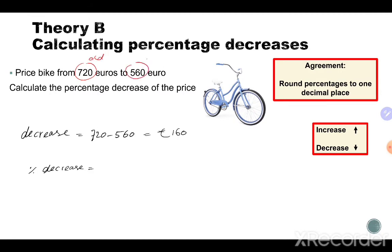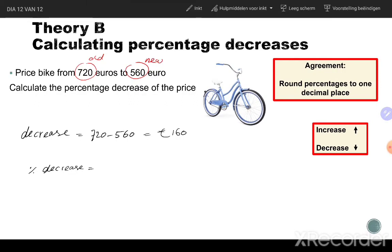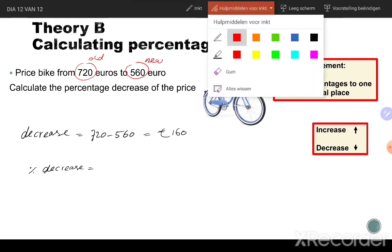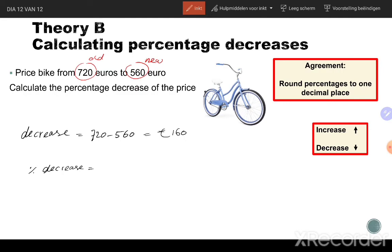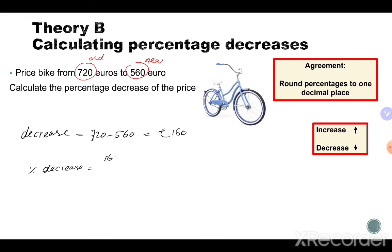To calculate the percentage decrease, we do 160 divided by 720, then multiplied by 100. So we divide by the old price. 160 divided by 720, multiplied by 100, gives you 22.2 percent.